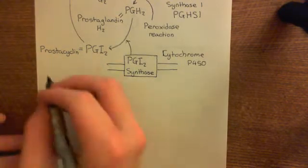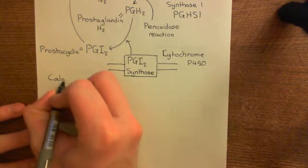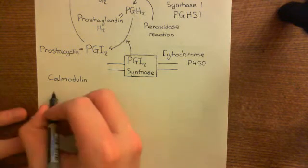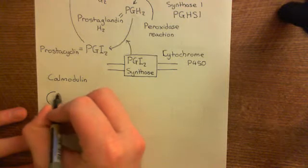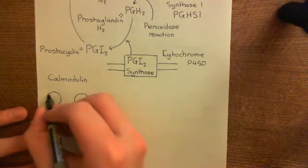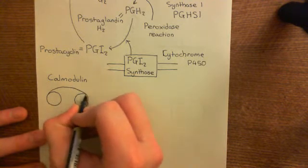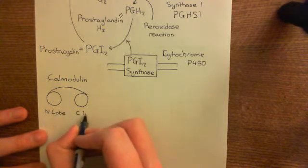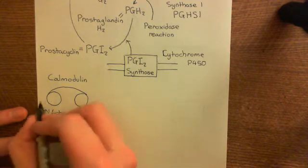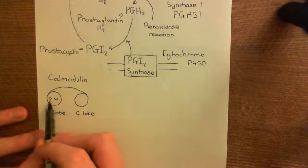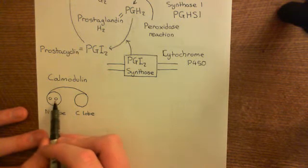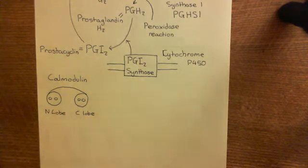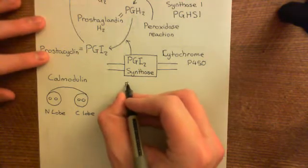When calcium rises, it binds to a protein known as calmodulin. Calmodulin has two lobes — the N-lobe and the C-lobe — with a linker in between them. Both lobes have two calcium binding sites each, so the N-lobe has two binding sites for calcium and the C-lobe also has two binding sites for calcium. These binding sites are known as EF-hand domains.